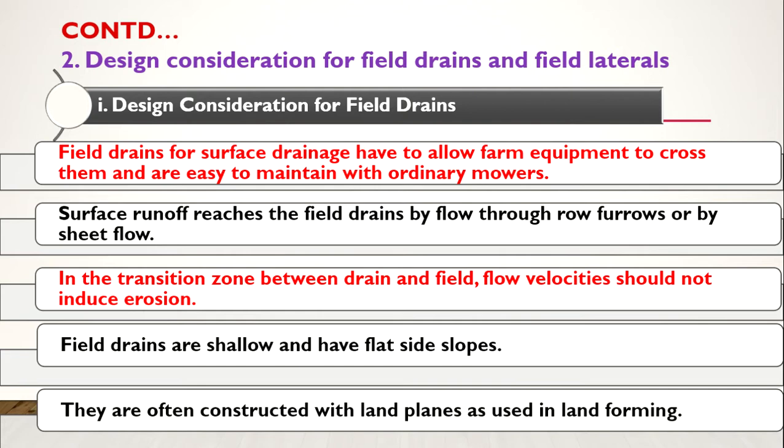Field drains for surface drainage have to allow farm equipment to cross them and are easy to maintain with ordinary mowers, because we are constructing this drainage system above the land. If we construct bigger or deeper drainage systems, we cannot use farm implements across them. The cultivation area or farm operation area will decrease, so we have to construct the drains in such a way that farm equipment can be used above them.